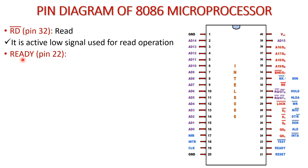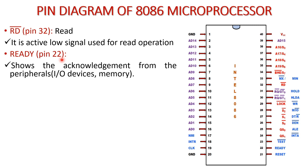The next pin, pin number 22, is READY. Ready is an input signal, meaning the signal comes to the microprocessor from the outer environment. Ready basically shows the acknowledgement from peripherals — that may be your input/output devices or memory. It is received from memory or input/output devices by the microprocessor. Its high state indicates that the peripheral is ready to transfer data.